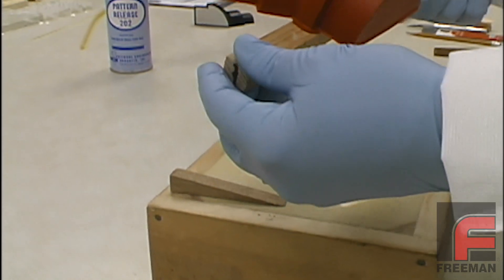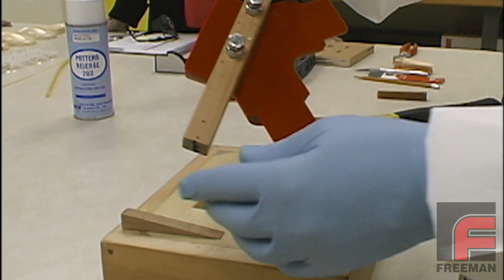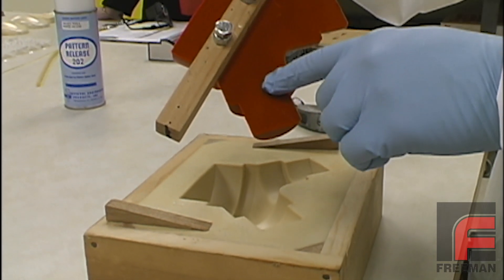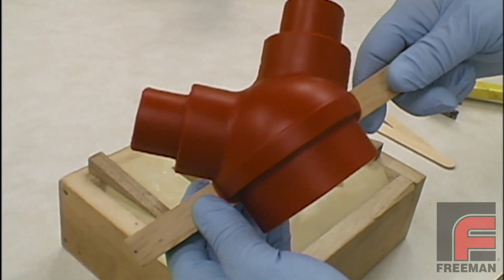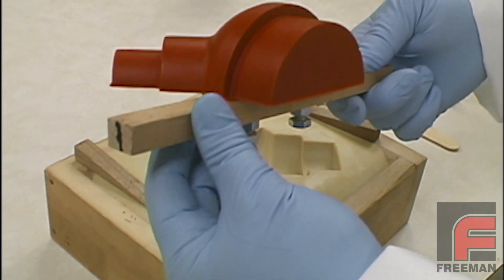Here's what the finished part looks like. The bottom of this part can now be machined flat for mounting purposes. A pattern constructed using these materials and this procedure will produce a highly abrasion resistant as well as impact resistant pattern.